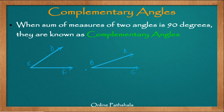Now let us learn about complementary angles. Whenever two angles are such that when we add the measure of two angles and that comes out to be 90 degrees, they are known as complementary angles. They are related by the fact that if we take a sum of the measures, that would be equal to 90 degrees. Those are simply the complementary angles. So let us look at this example.